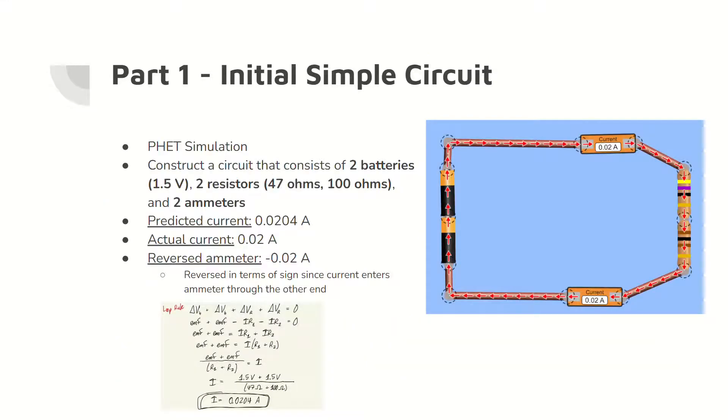In part one, a simple circuit was created with the parameters shown. The ammeter then measures the current flowing through the circuit. Importantly, the predicted current and measured current are nearly identical. When the ammeter is reversed, the measured current is negative as the current enters the ammeter through the other end.